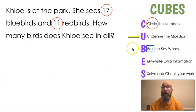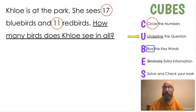Next, we're going to underline the question. If you remember from the subtraction video, I told you a little secret: you look for the question mark. And we find that right here. So this sentence is going to be the question. How many birds does Chloe see in all?